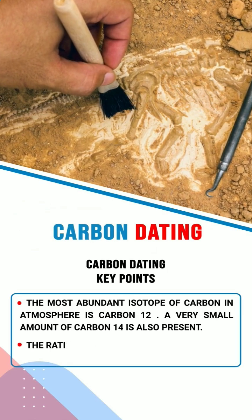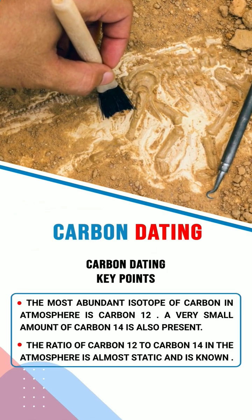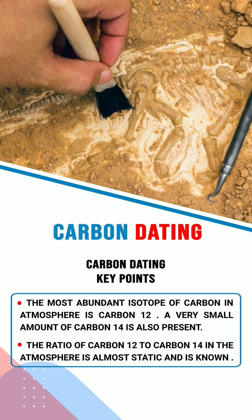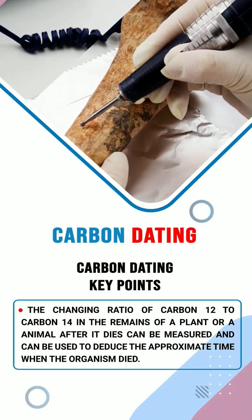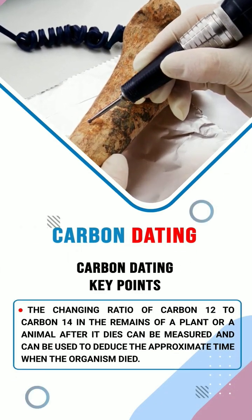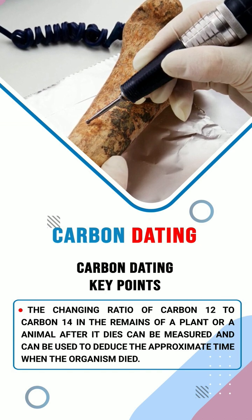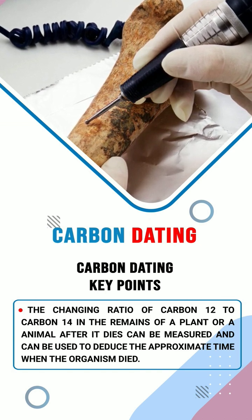The most abundant isotope of carbon in the atmosphere is carbon-12. A very small amount of carbon-14 is also present. The ratio of carbon-12 to carbon-14 in the atmosphere is almost static and is known. The changing ratio of carbon-12 to carbon-14 in the remains of a plant or animal after it dies can be measured and used to deduce the approximate age of the sample.